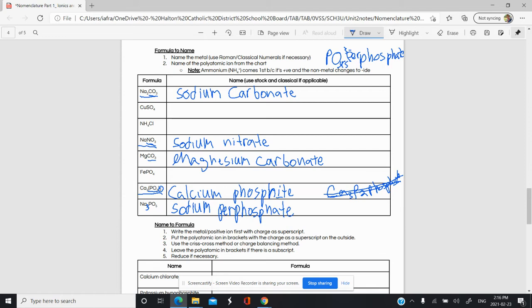Next, we're going to name a few other ones. Let's name this one over here. Normally, we'd name the metal first and then the non-metal or the polyatomic ion after. But in this case, we have an exception.